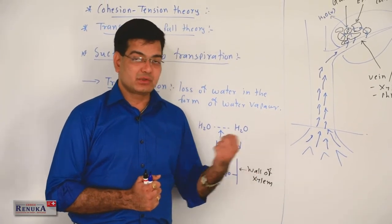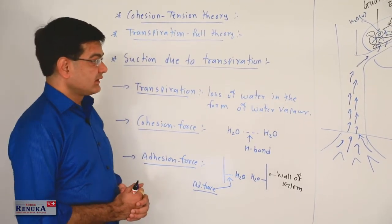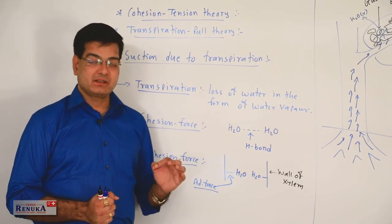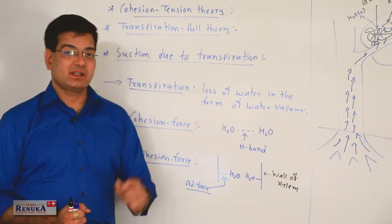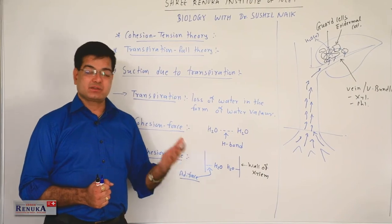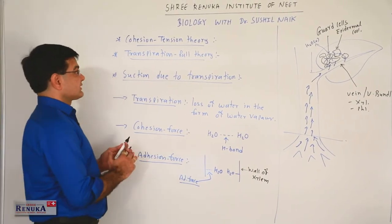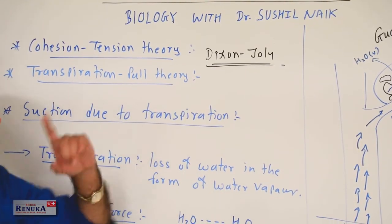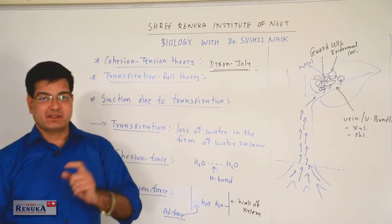Due to transpiration, a pull develops and water moves upward, explaining the ascent of sap in tall trees. The cohesive force between water molecules is nearly 1000 atmospheric pressure, which is more than sufficient for the ascent of sap in the tallest trees. This theory was given by Dixon and Jolly, the scientists who proposed the transpiration pull theory to explain the ascent of sap.